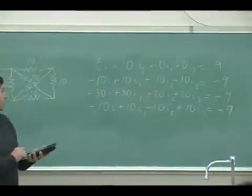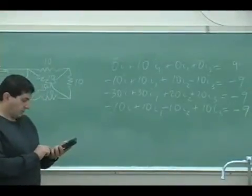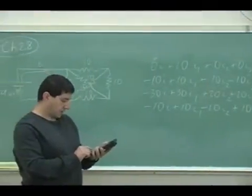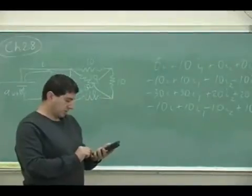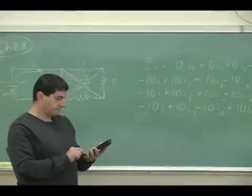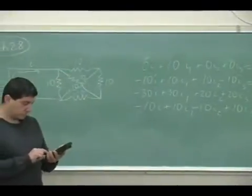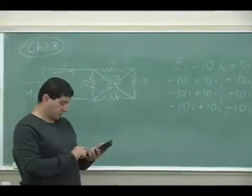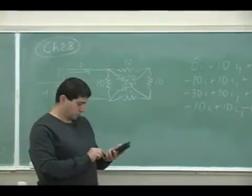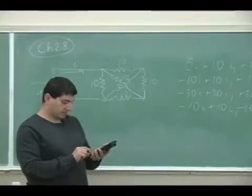Then I'm going to put negative 10, 10, 10, negative 10 is equal to negative 9. Then I'm going to put negative 30, 30, 20, 20, and negative 9.